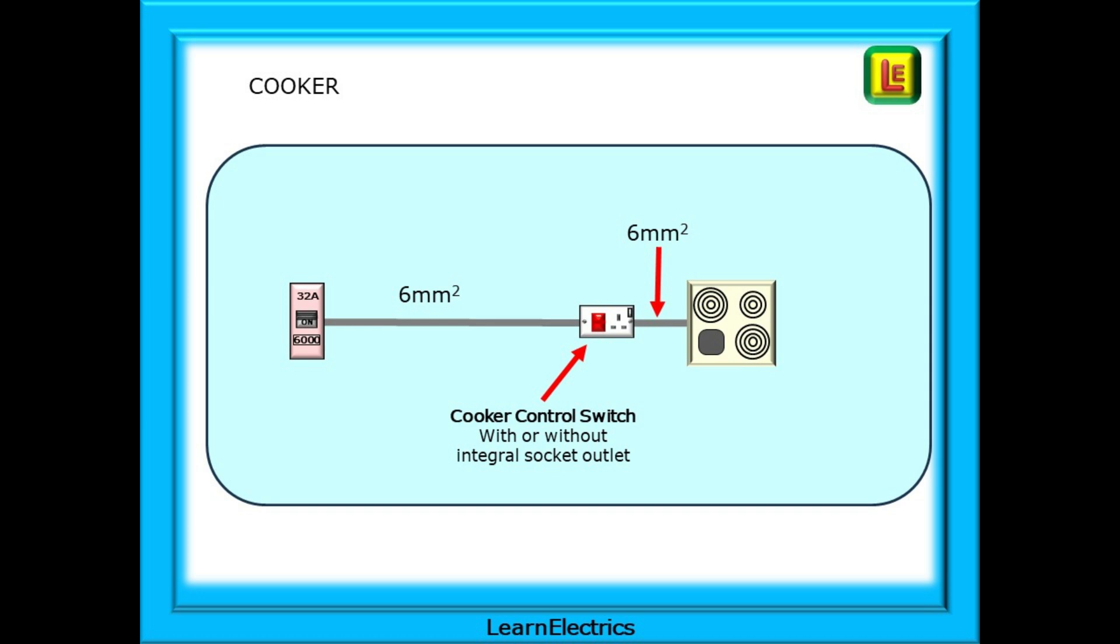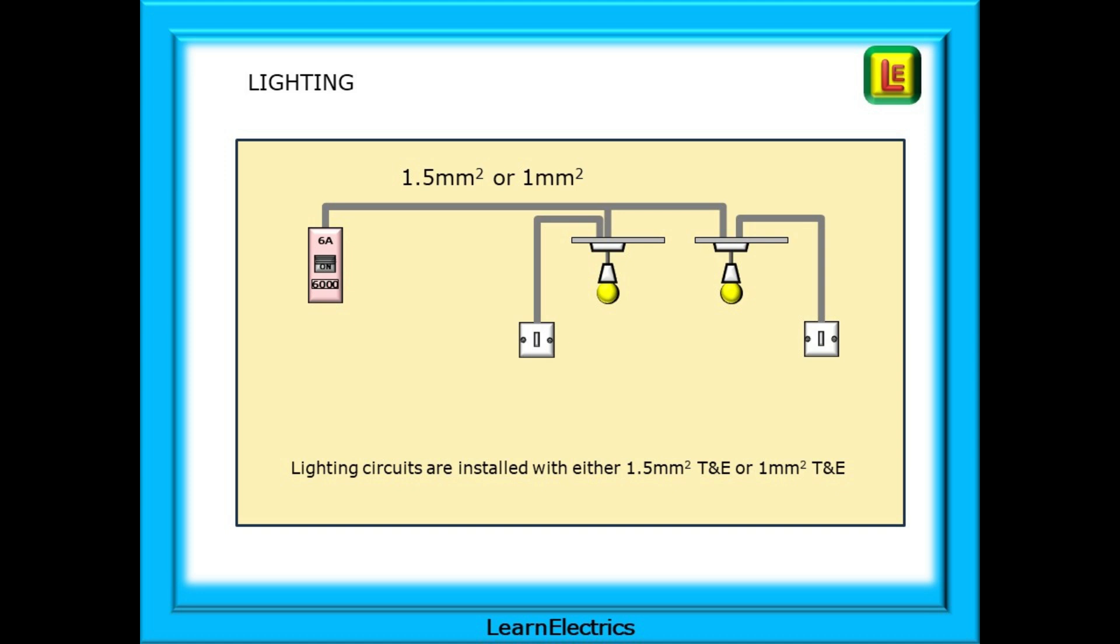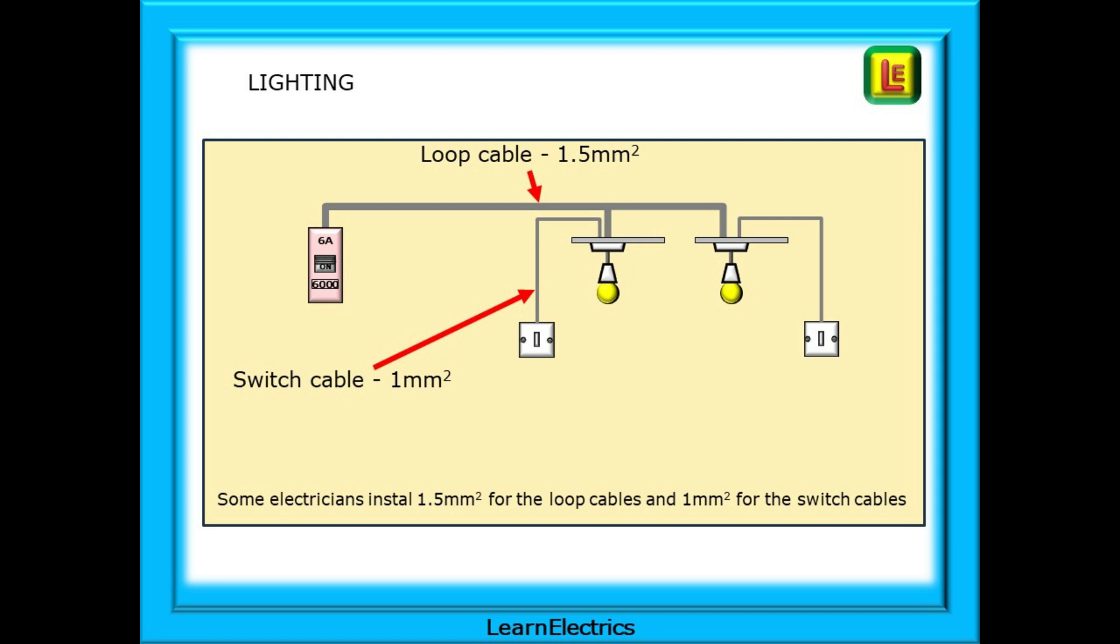Lighting circuits may only have 2 or 3 amps of design current, especially with modern low-energy lamps, and will be protected by a 6-amp breaker or 5-amp fuse using 1.5mm or 1mm twin-in-earth cable. Some electricians will use a mixture of 1.5mm and 1mm cable. They will use 1.5mm² for the loop cables, from the consumer unit to the ceiling rows and to the next ceiling rows, and then they will install 1mm² cable for the switch drops. This helps with quickly identifying which cables are the loop and which are the switch.